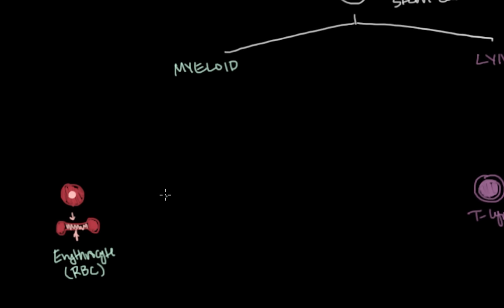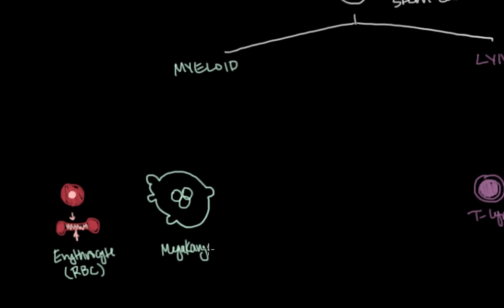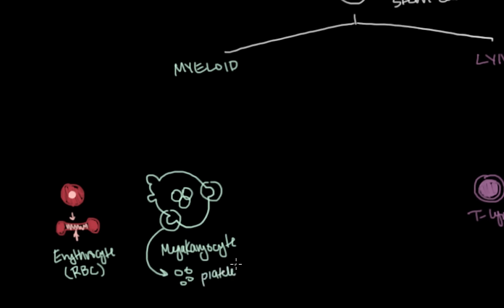So what are some of the other types of myeloid cells? Well we have this one very odd looking, very large cell, and it's called a megakaryocyte. And even if you've never heard of a megakaryocyte before, you may have heard of what it gives rise to. Because a megakaryocyte gives off little blebs of its cytoplasm to form these small cell fragments. And these fragments are known as platelets.